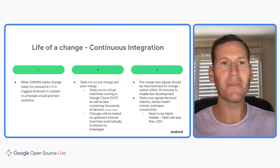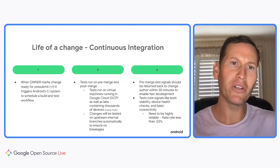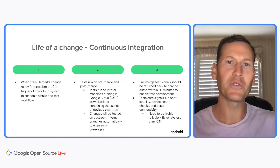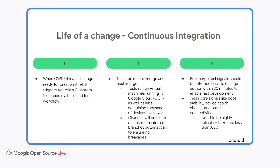For the second part, we're going to cover continuous integration, including system health testing, test operations, when a change gets released, and a hands-on Codelab you can try out for yourself. The CI system enables Android to develop at scale. When the owner marks a change ready, tests will run pre-merge and post-merge. These tests run on virtual machines in Google Cloud, enabling great scale, as well as on thousands of physical devices. The tests run on AOSP branches, as well as internal branches to ensure no breakages. For tests to be in pre-submit, they need to be completed within 30 minutes and have a flake rate of less than 0.02% to ensure developer velocity.